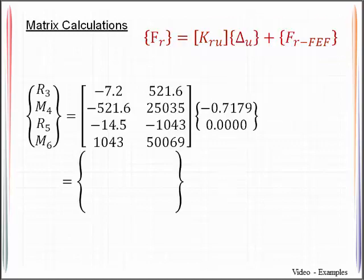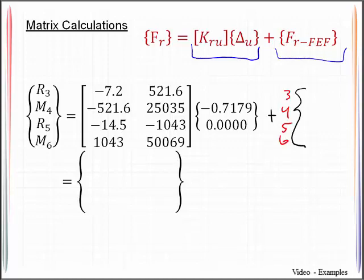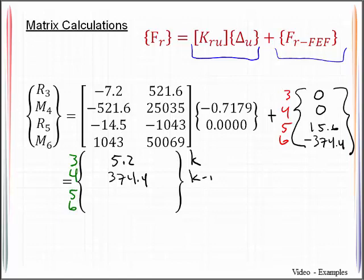The next step would be to calculate the reactions by taking the usual calculation of K_RU times delta U. But then we need to make a correction to those reactions based upon the fixed end forces that we had there. And so as a reminder we do have these fixed end forces that we computed before for degree of freedom 3, 4, 5, and 6 having those respective values of 0, 0, 15.6 and negative 374.4. We perform those matrix operations and get the following reactions for degrees of freedom 3, 4, 5, and 6. That will give me 5.2 kips, 374.4 kip inches, 26.0 kips and negative 1123.2 kip inches.